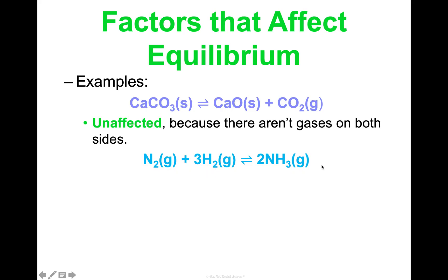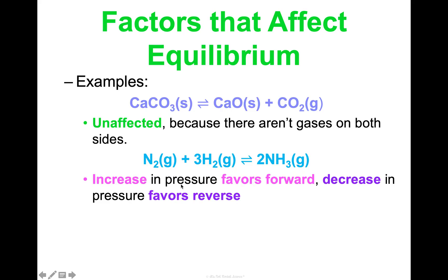Now let's look at a reaction with gases on both sides. If we increase pressure, it's going to favor the forward reaction; if we decrease pressure, it will favor the reverse. Look at the coefficients: we have 1 plus 3, that's four moles of gas on the reactant side, compared to two moles of gas on the product side. If I increase pressure, that favors the side making fewer gas molecules — so we go forward. If I decrease pressure, we favor the side making more gas — the four-mole side — so we favor the reverse.